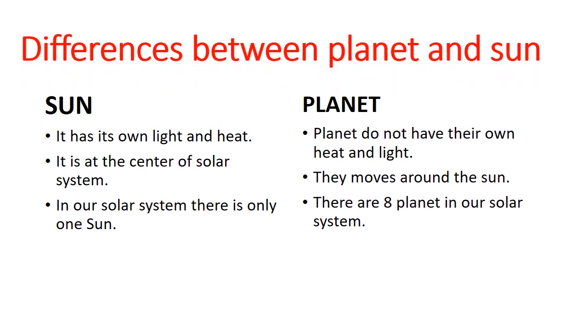Differences between planet and sun: Sun has its own light and heat while planets do not have their own heat and light. Sun is at the center of solar system. Planets move around the sun. In our solar system there is only one sun while there are eight planets.